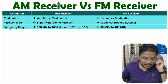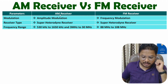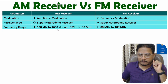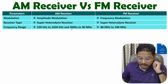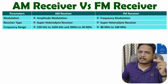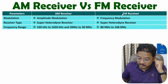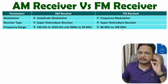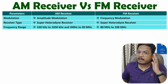The next parameter is frequency range. In AM receiver, we have two different frequency ranges: one from 530 kHz to 1650 kHz, which is used with AM broadcast, and a second range from 3 MHz to 30 MHz for various applications. With FM receiver, we have a frequency range from 88 MHz to 108 MHz, which is used with FM broadcast.